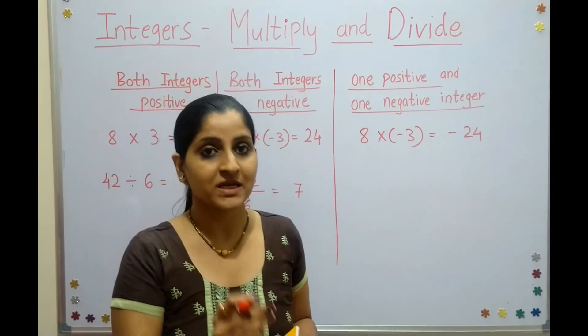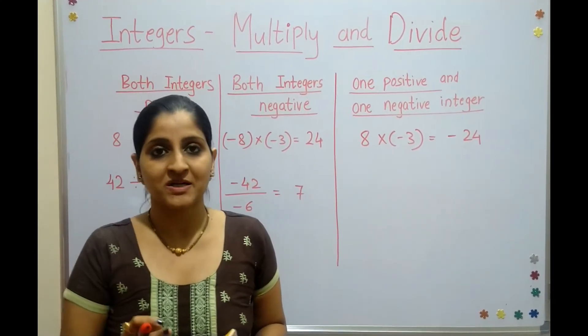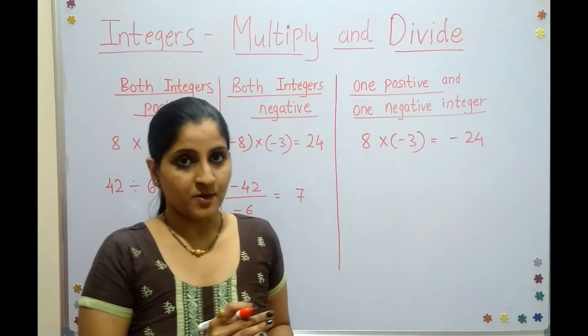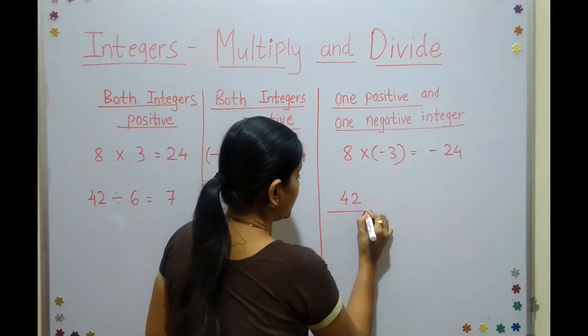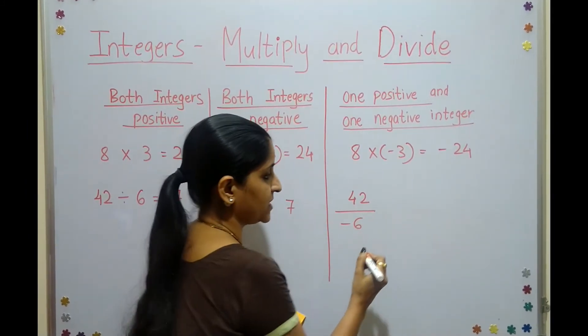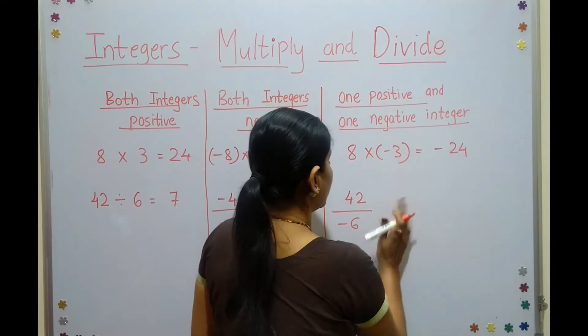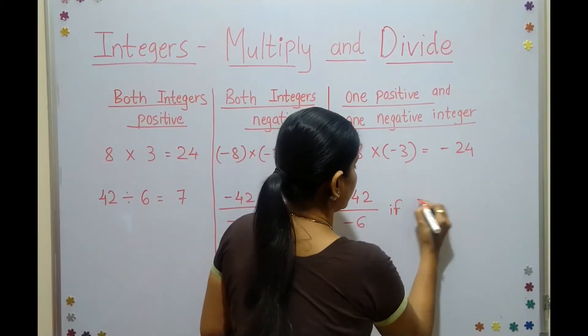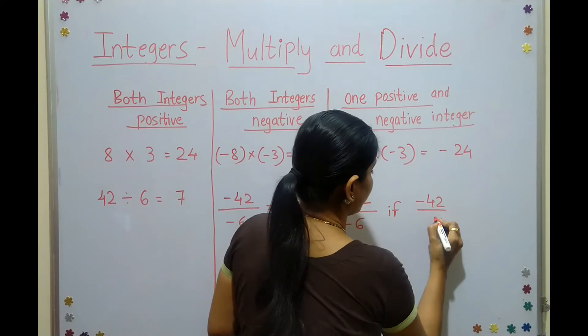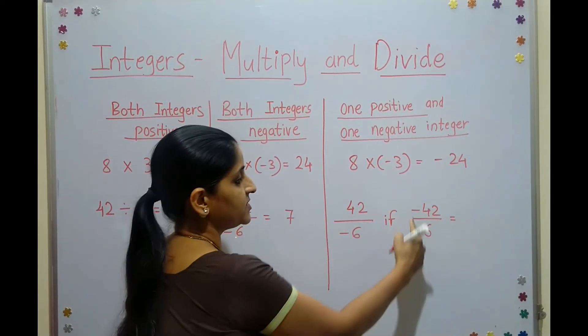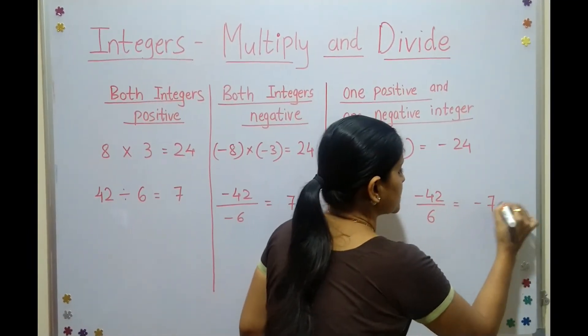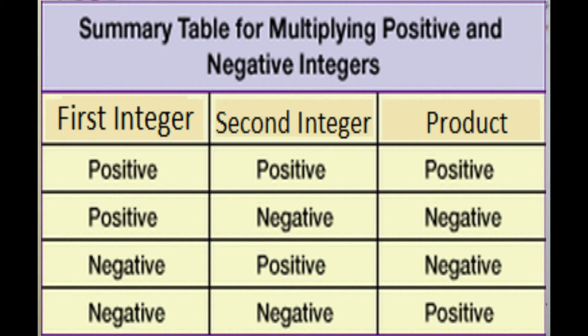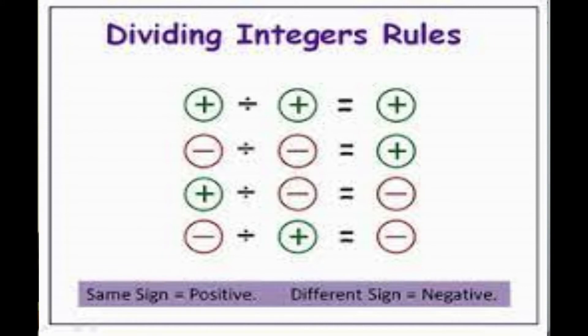The answer will always be negative if any positive number is multiplied by a negative number. The same applies to division. If a positive number is divided by a negative integer, or vice versa—like negative 42 divided by positive 6—when any one number is negative, the answer is always negative. These are the three rules for multiplication and division of integers.